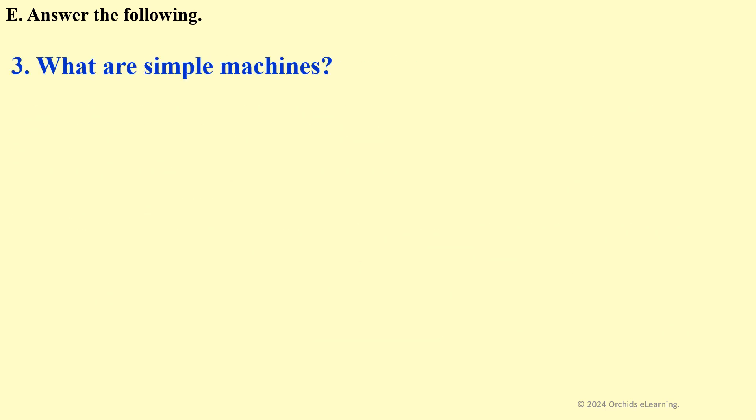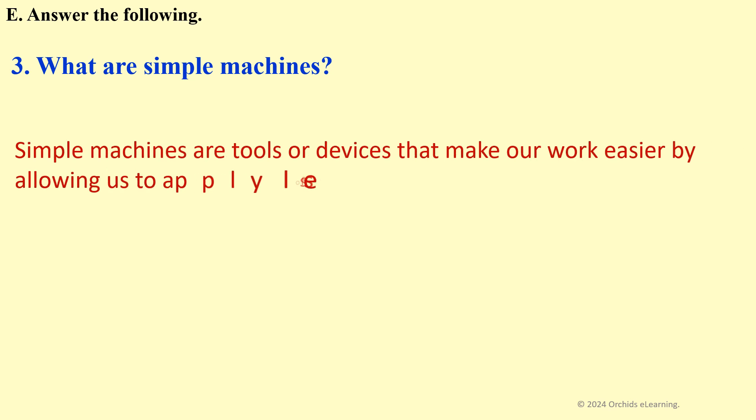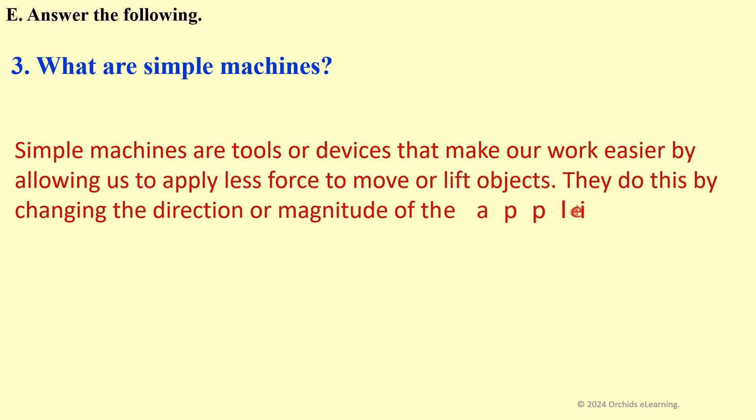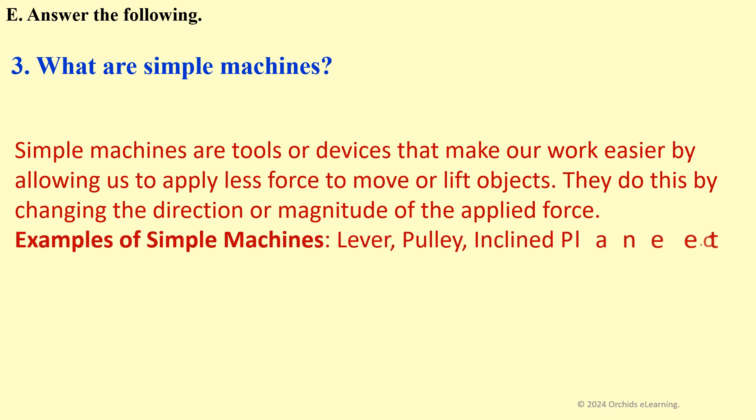What are simple machines? Simple machines are tools or devices that make our work easier by allowing us to apply less force to move or lift objects. They do this by changing the direction or magnitude of the applied force. Examples of simple machines: Lever, pulley, inclined plane, etc.